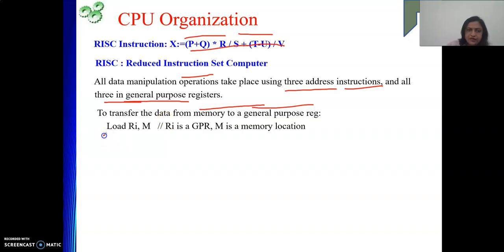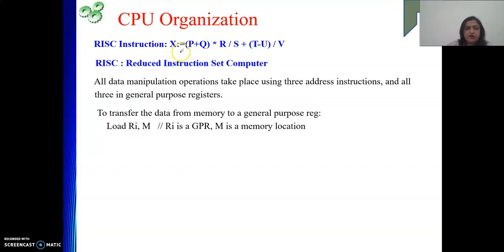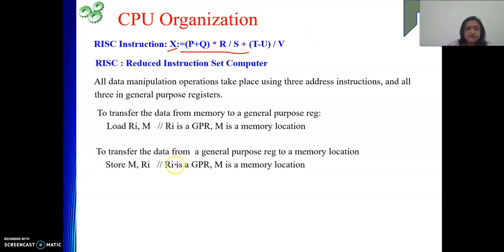The load instruction format is: 'LOAD Ri, M' where LOAD is the mnemonic, Ri is the destination register, and M is the source memory location — for example, LOC, NUM, A, B, etc. The value at that memory location is loaded into register Ri. After doing the operation, to transfer a value to memory location X, we use the store instruction. The store instruction transfers data from a general purpose register to a memory location: 'STORE M, Ri', where M is the destination and Ri is the source.